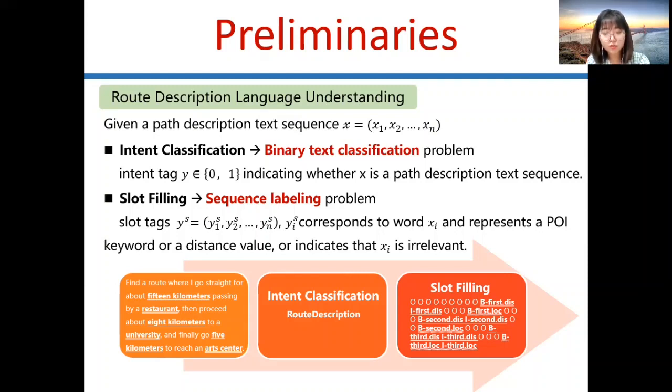Suppose a user issues a query: Find a route where I go straight for about 15 km passing by a restaurant, then proceed 8 km to a university, and finally go 5 km to reach an art center. SpeakNav first determines this is a path description text sequence, and then performs slot filling through BIO annotation.